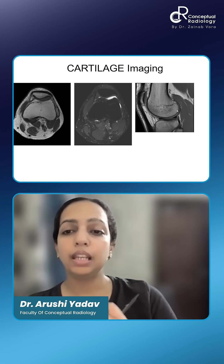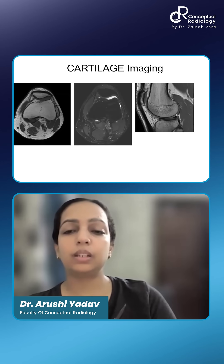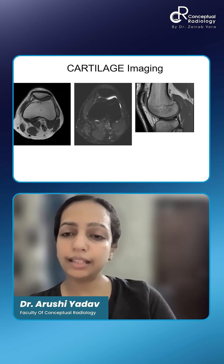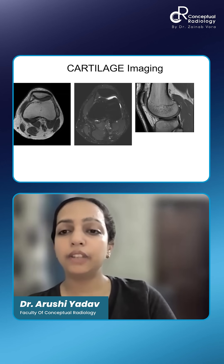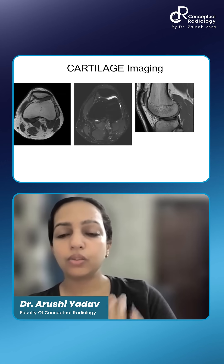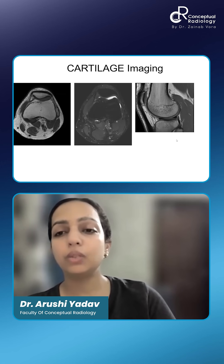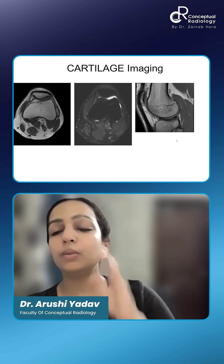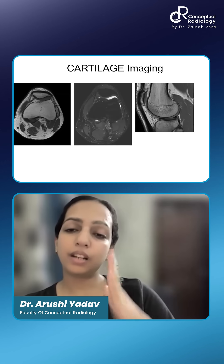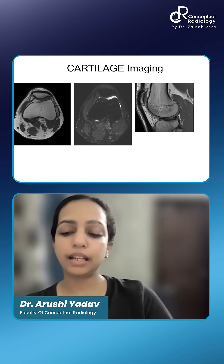Whereas in this particular sequence, the interface on either side is very beautifully seen, and we can actually draw pencil-thin borders on both the above and the below. So this is like a PD sequence. We know that PD sequence is the main sequence — the key sequence behind cartilage imaging and in general MSQ also.